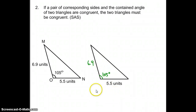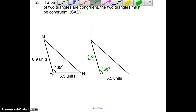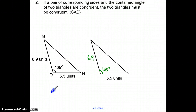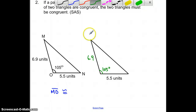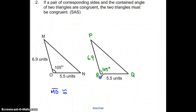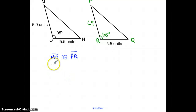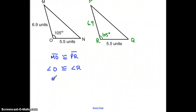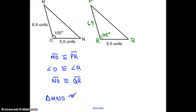Using the notation: MO is congruent to PR, angle O is congruent to angle R, and NO is congruent to QR. Therefore, triangle MNO is congruent to triangle PQR by SAS.